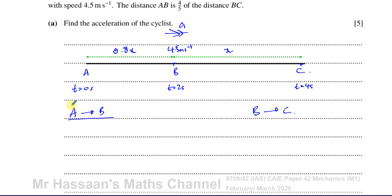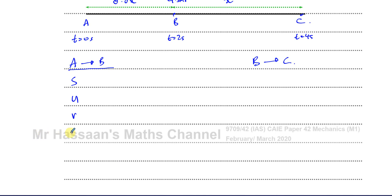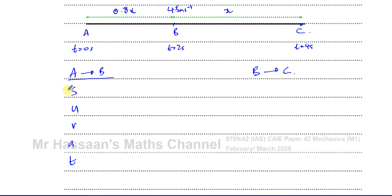Considering from A to B: S is 0.8X, U is UA (unknown), V is the final velocity at B which is 4.5 meters per second, A is the acceleration we need to find, and T between A and B is two seconds. That's the information we have about A to B.